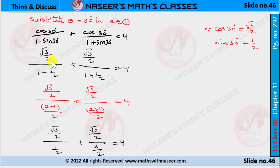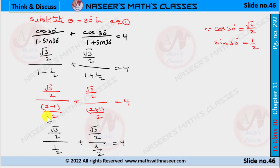Then we get (√3/2) / (1 − 1/2) + (√3/2) / (1 + 1/2) = 4. Taking LCM in the denominator: 1 − 1/2 = (2 − 1)/2 and 1 + 1/2 = (2 + 1)/2. After simplification, (2 − 1)/2 = 1/2 and (2 + 1)/2 = 3/2.